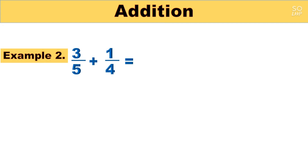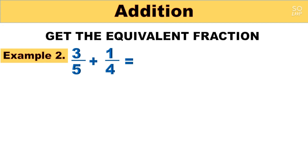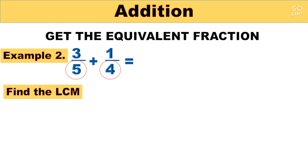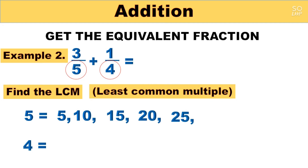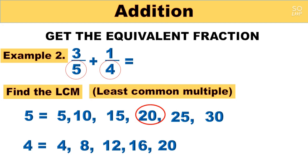Example number 2: 3 over 5 plus 1 over 4. First step: get the equivalent fraction. The denominators are 5 and 4, so we find the LCM — the least common multiple. Multiples of 5: 5, 10, 15, 20, 25, 30. Multiples of 4: 4, 8, 12, 16, 20. The closest common multiple of 5 and 4 is 20.